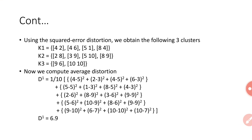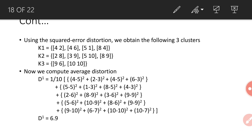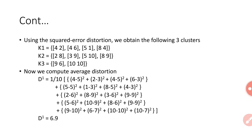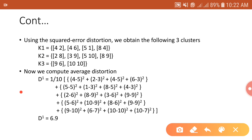For cluster K3, vectors (9,6) and (10,10) are closest to the representative vector R3 = (10,7). After the training vectors are divided into 3 clusters, we compute the average distortion for the first iteration, denoted D1.